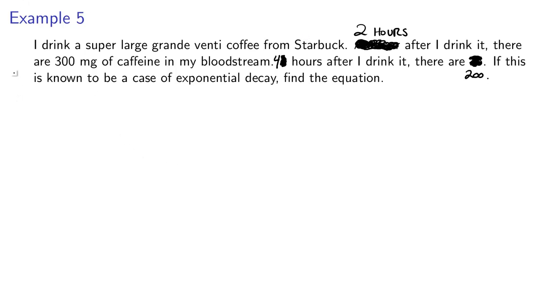And so specifically, they're saying, I go to Starbucks, and I notice that two hours after I drink my super large grande venti coffee, there's 300 milligrams of caffeine in my system. Four hours after I drink it, there's 200. So on a graph, basically what they're doing is they're telling us, well, if I have an input of two, my output is 300, if I have an input of four, my output is then 200.